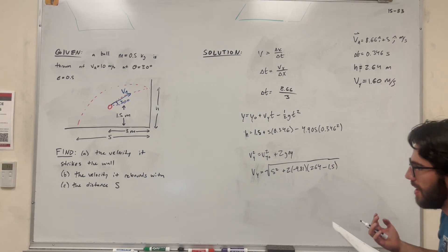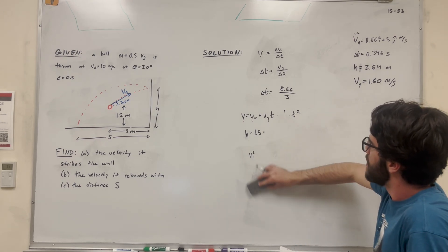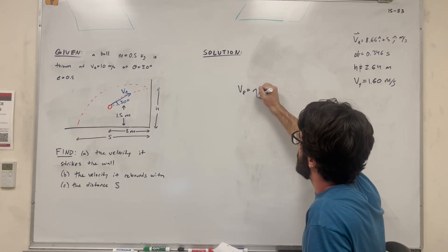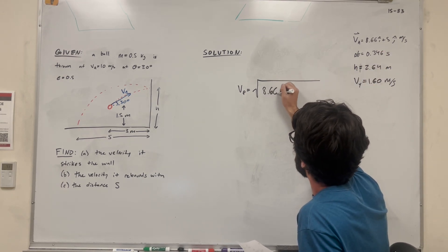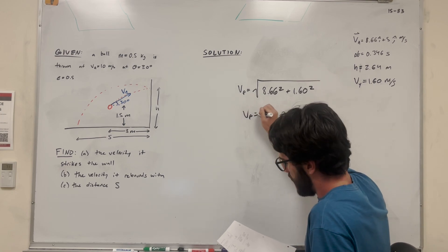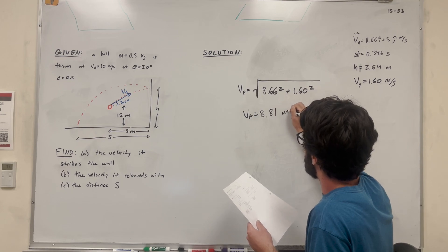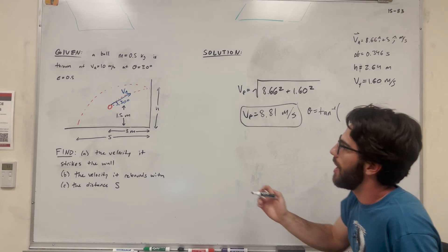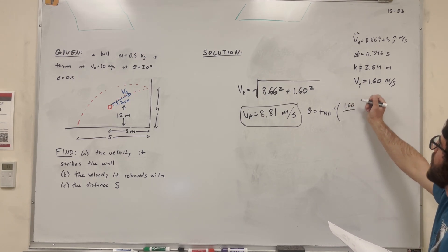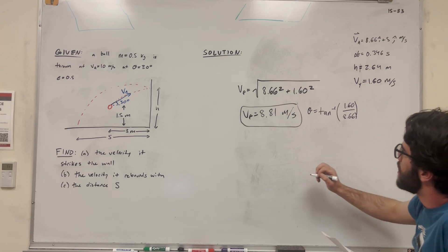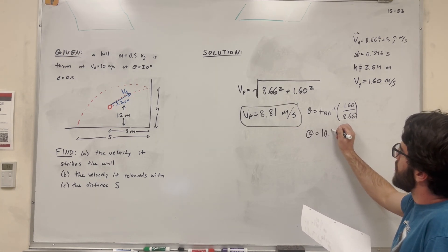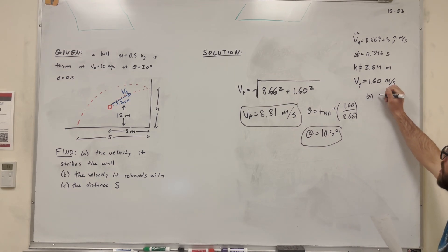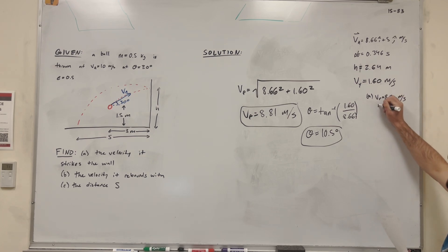So now we have our final y-component. If we want to solve for the total velocity when it hits the wall, it's going to be the square root of the x and y components: square root of 8.66 squared plus 1.60 squared, which equals 8.81 meters per second. And for the angle, theta equals inverse tangent of y over x — inverse tangent of 1.60 over 8.66 — giving theta equals 10.5 degrees. So for Part A, velocity equals 8.81 m/s and theta equals 10.5 degrees.